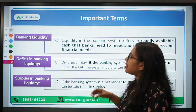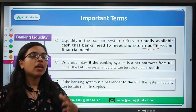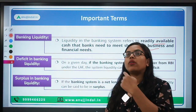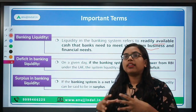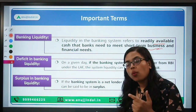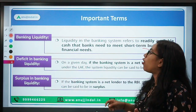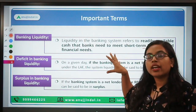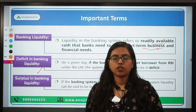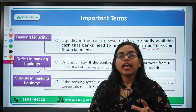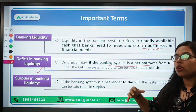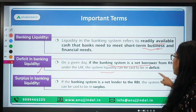What is deficit and surplus in banking liquidity? Suppose there are several banks in the country — if together all of these banks are net borrowers from RBI, they are unable to fulfill their short-term business and financial needs and are forced to take a loan from RBI. Then at that time, it is called that the banking liquidity is in deficit. Very simply: if the entire banking system together is the net borrower on any given day, then the system is said to be in deficit.